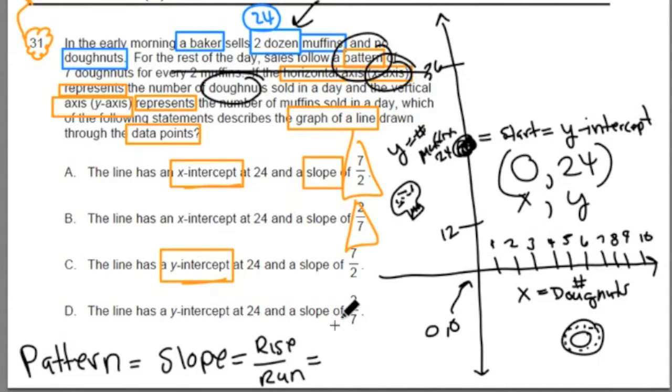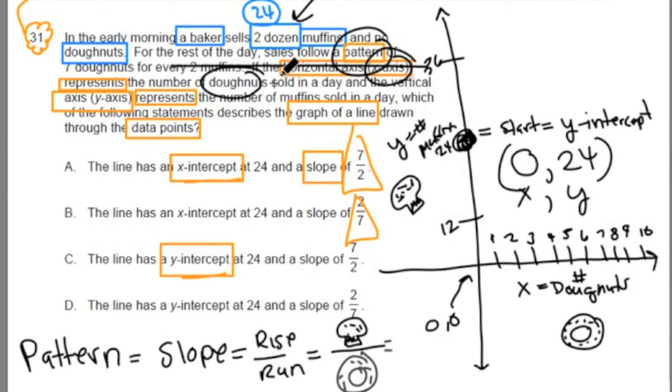In this case, the rise is represented by our muffins over the run, which is our doughnuts.